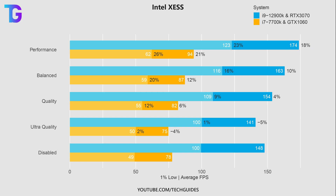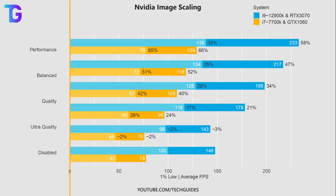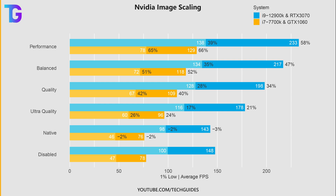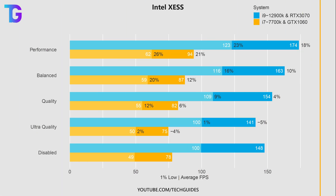Intel XeSS also runs at a lower native resolution than your display — in fact it runs at the same fraction of resolution as Nvidia Image Scaling, but compared to that it provides a much less significant improvement in performance.